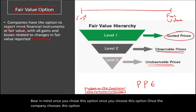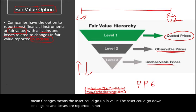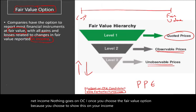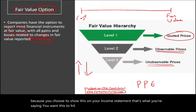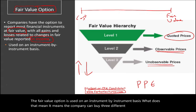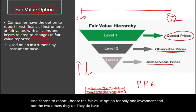all changes in the fair value — meaning the asset could go up in value or the asset could go down — all gains and losses are reported in net income. So everything is reported in net income; nothing goes on OCI. Once you choose the fair value option, you are saying you want this to hit your income. The fair value option is used on an instrument-by-instrument basis. It means a company can buy three different stocks and choose the fair value option for only one investment and not the other two.